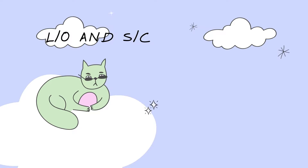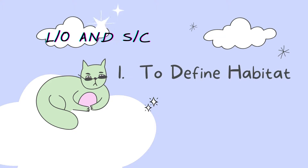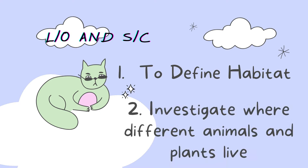So what is our learning objective and success criteria for today's class? Number one, to define habitats. At the end of the class, you should know the meaning of habitat. Number two, to investigate where different animals and plants live.